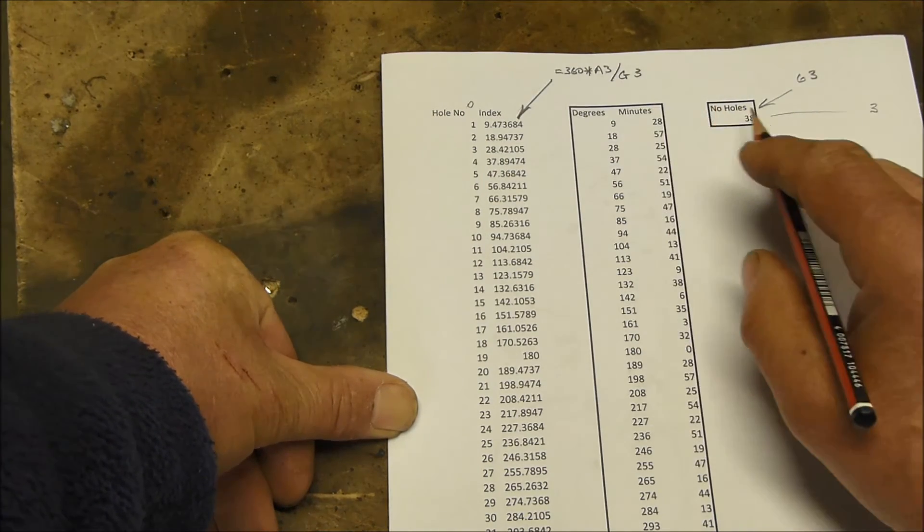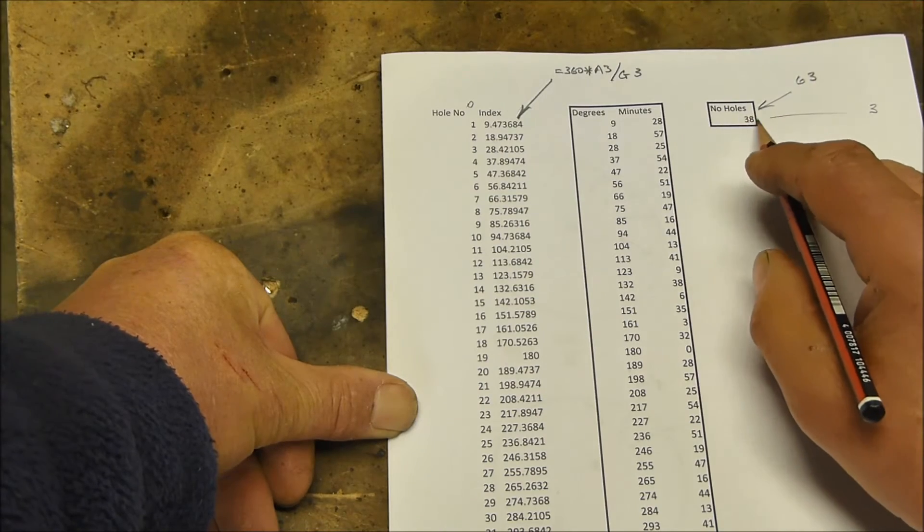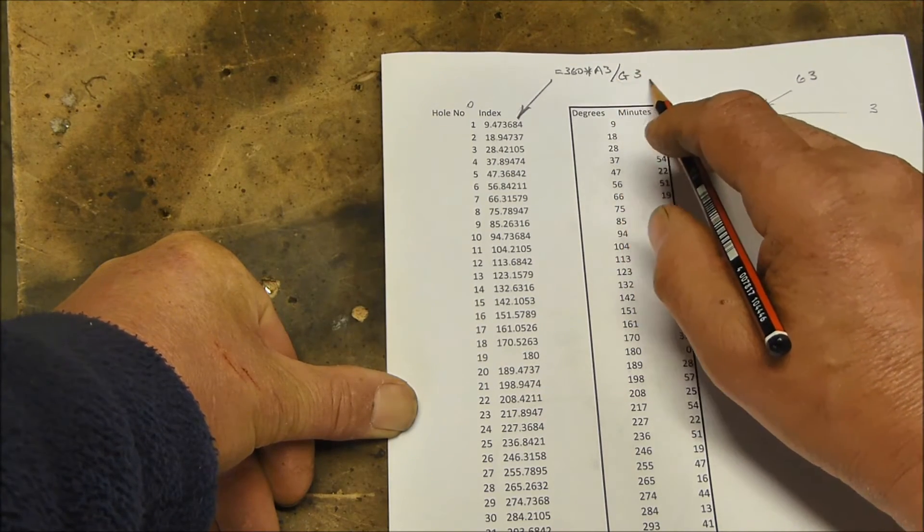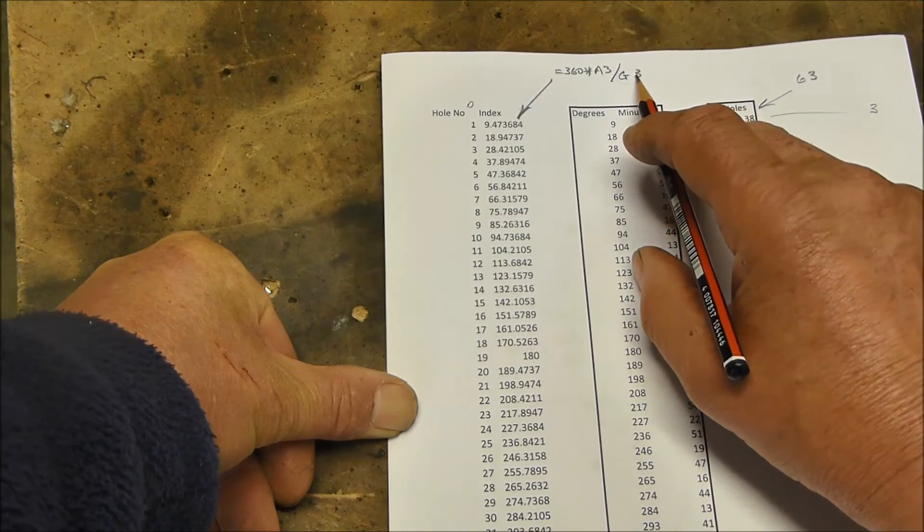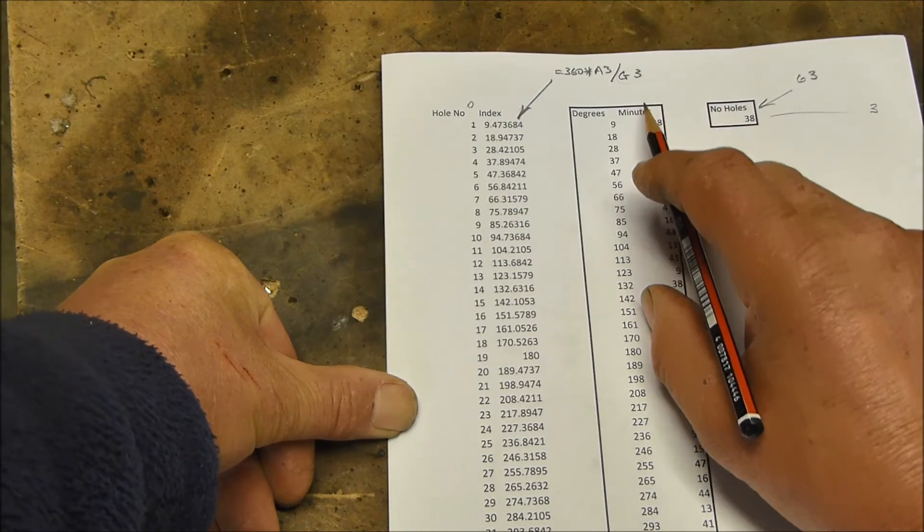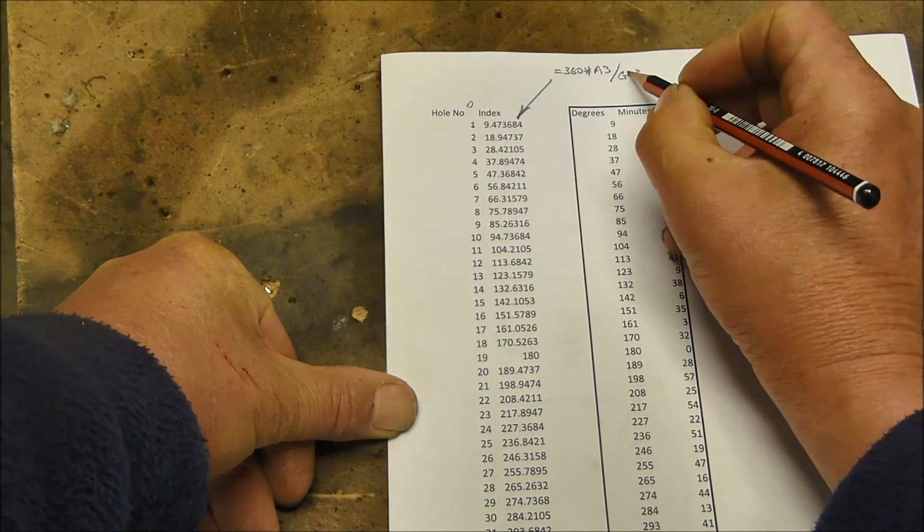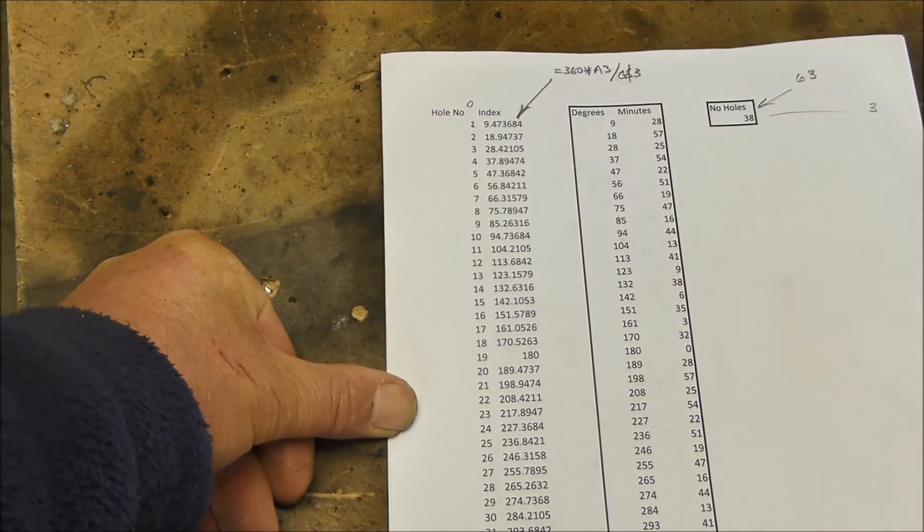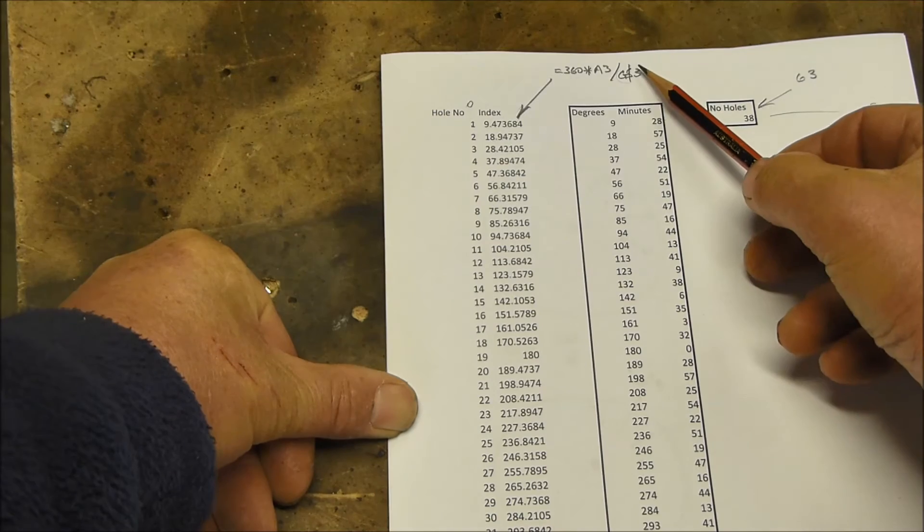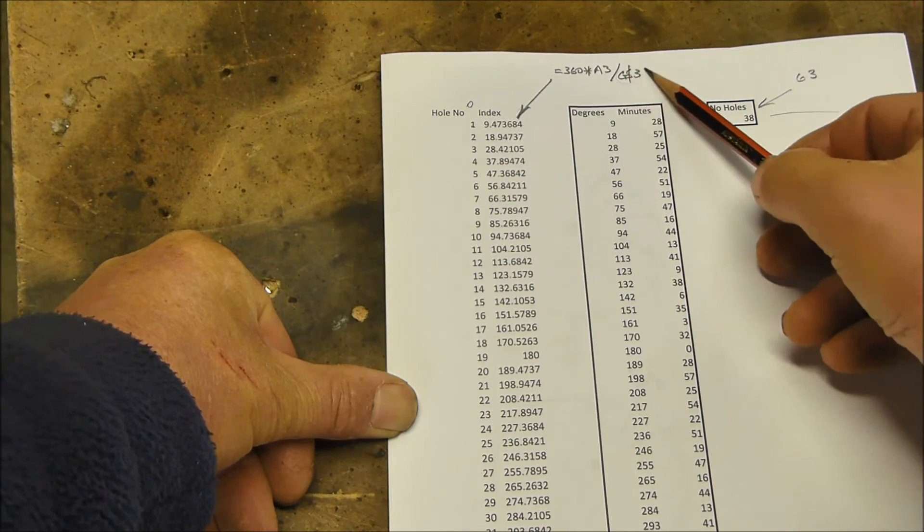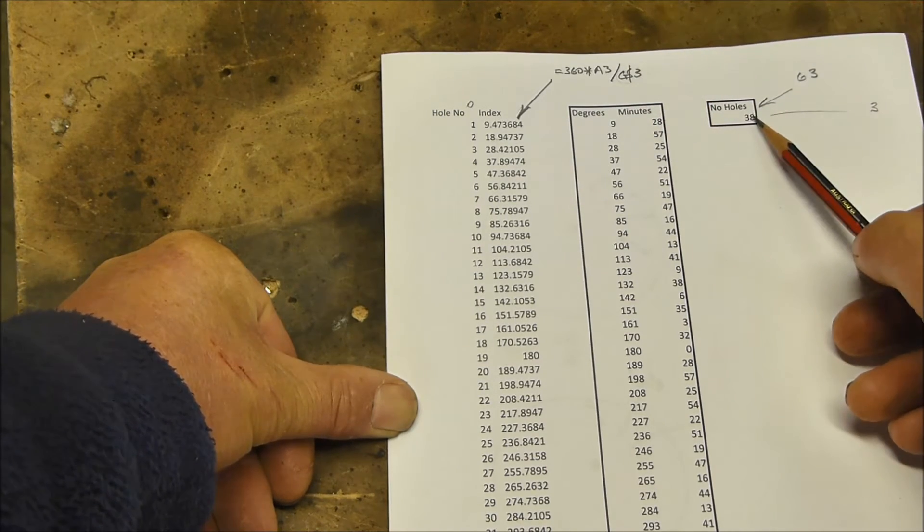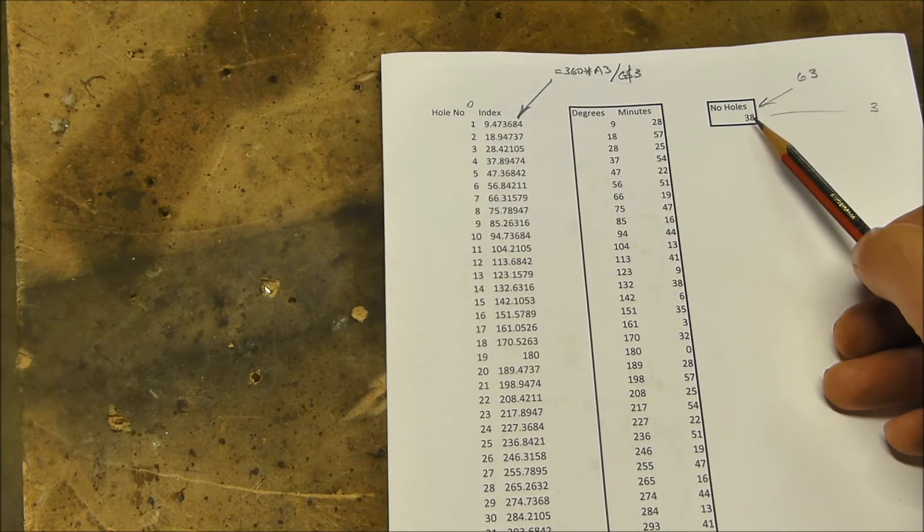However, it also will index, it will also increment that number there. So it would give us G3 the first time, G4 the second time, G5 the next time, and we don't want that. We want it to stay at G3. So we put a dollar symbol in there, and the dollar symbol tells Excel not to index that value, to leave it at the value in cell G3.